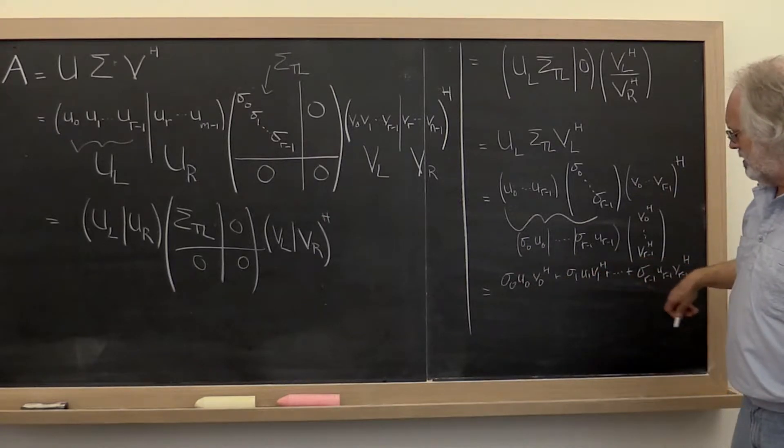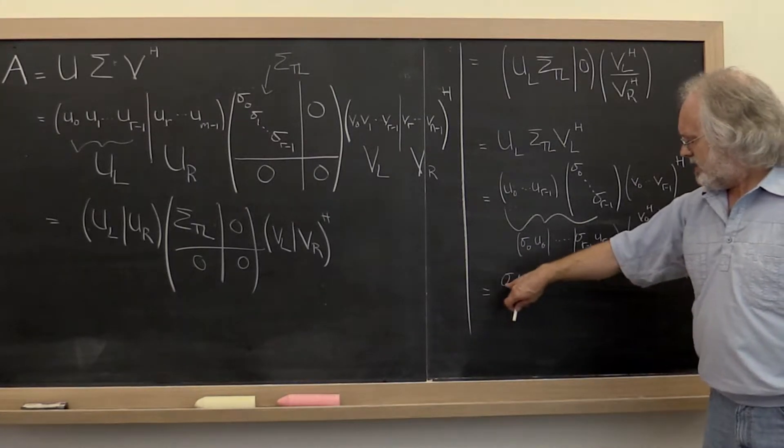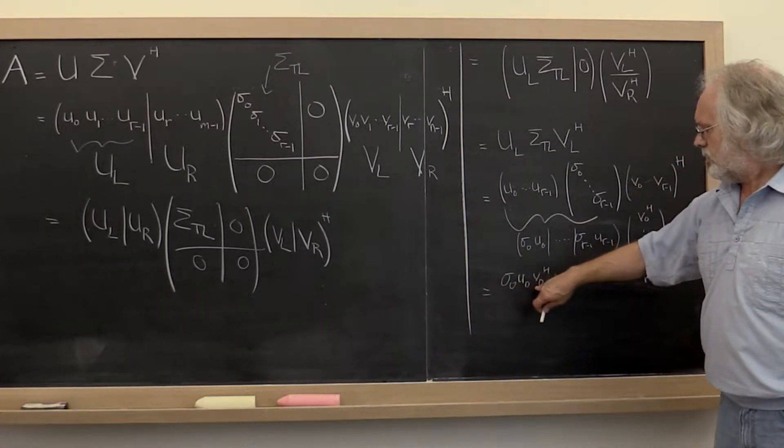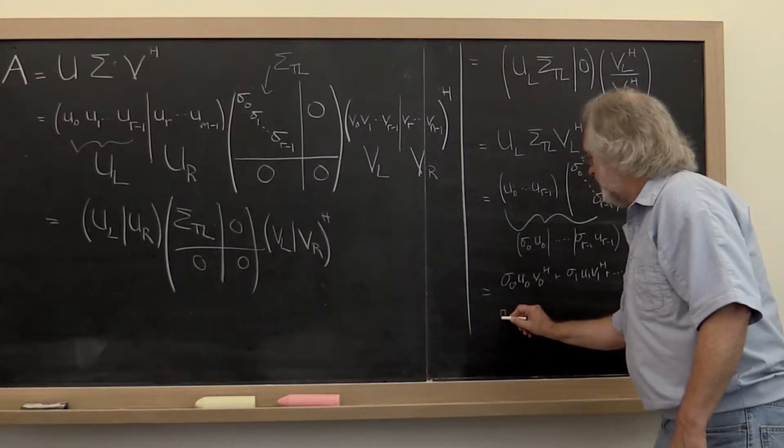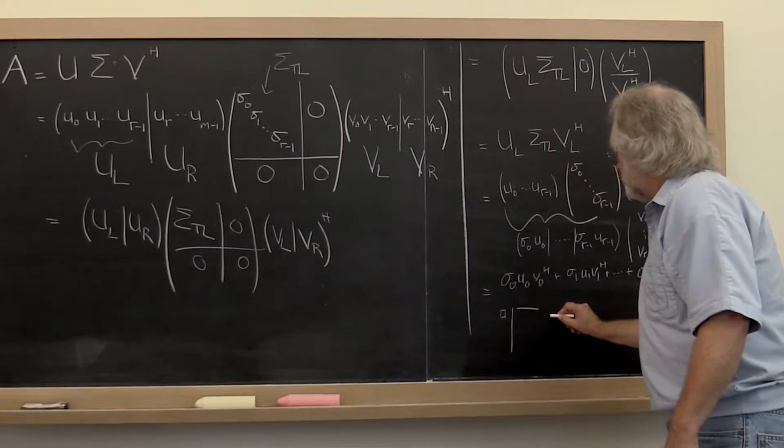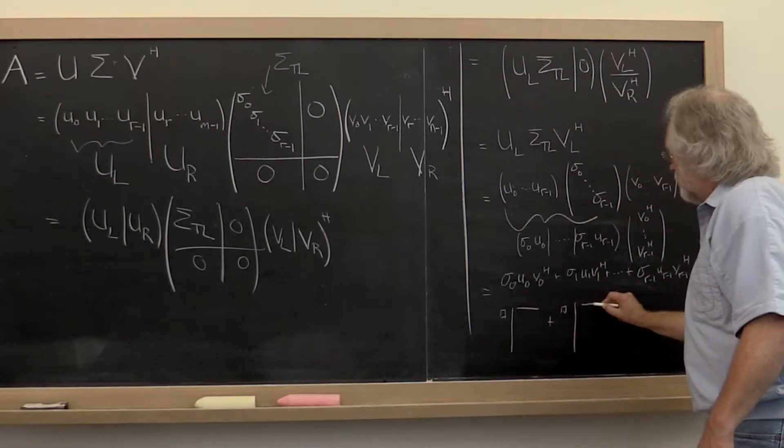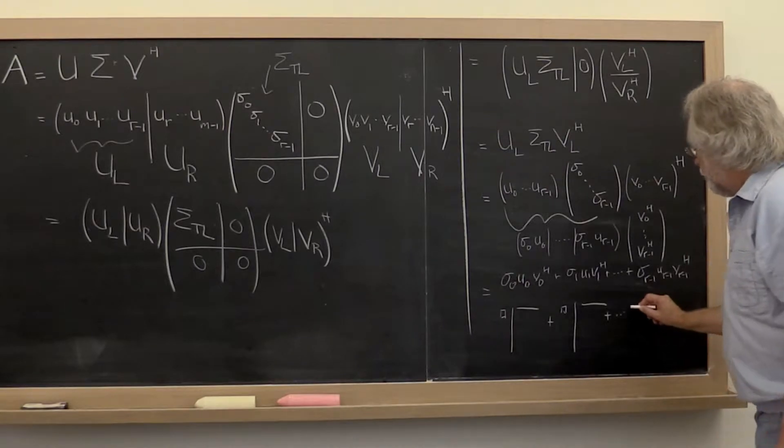And what are each of these? Well each of these is a scalar times an outer product. So this we can depict as a scalar times an outer product plus a scalar times an outer product and so forth.